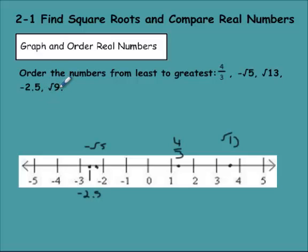And then one more, square root of 9, which would be positive 3. If we're going to write this in there, this would be the square root of 9. If you're going to order them, you just go from left to right. So negative 2.5 is the lowest. Negative square root of 5 is the second smallest. 4 over 3 is the next. Square root of 9 is next. Followed by the square root of 13.